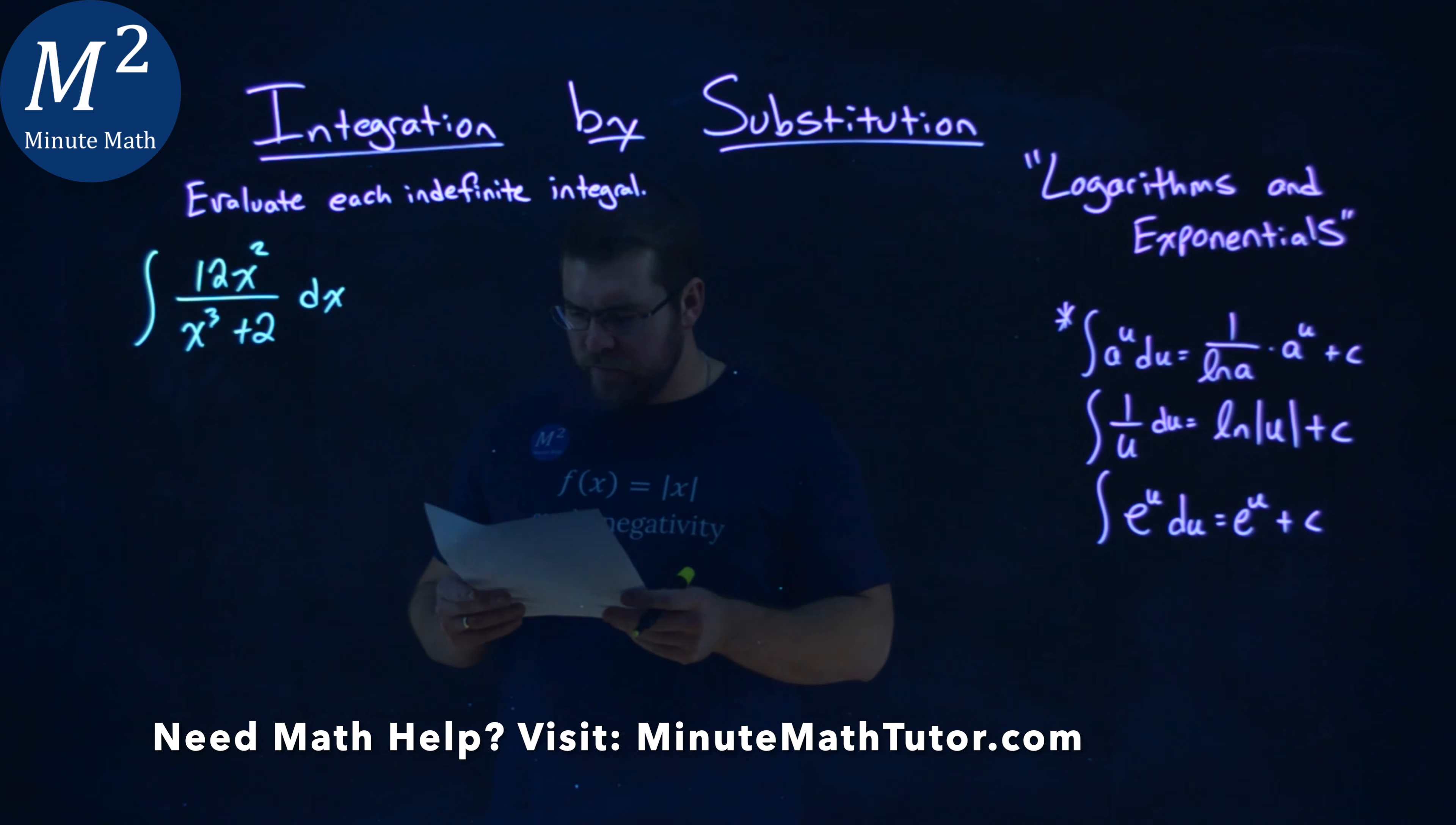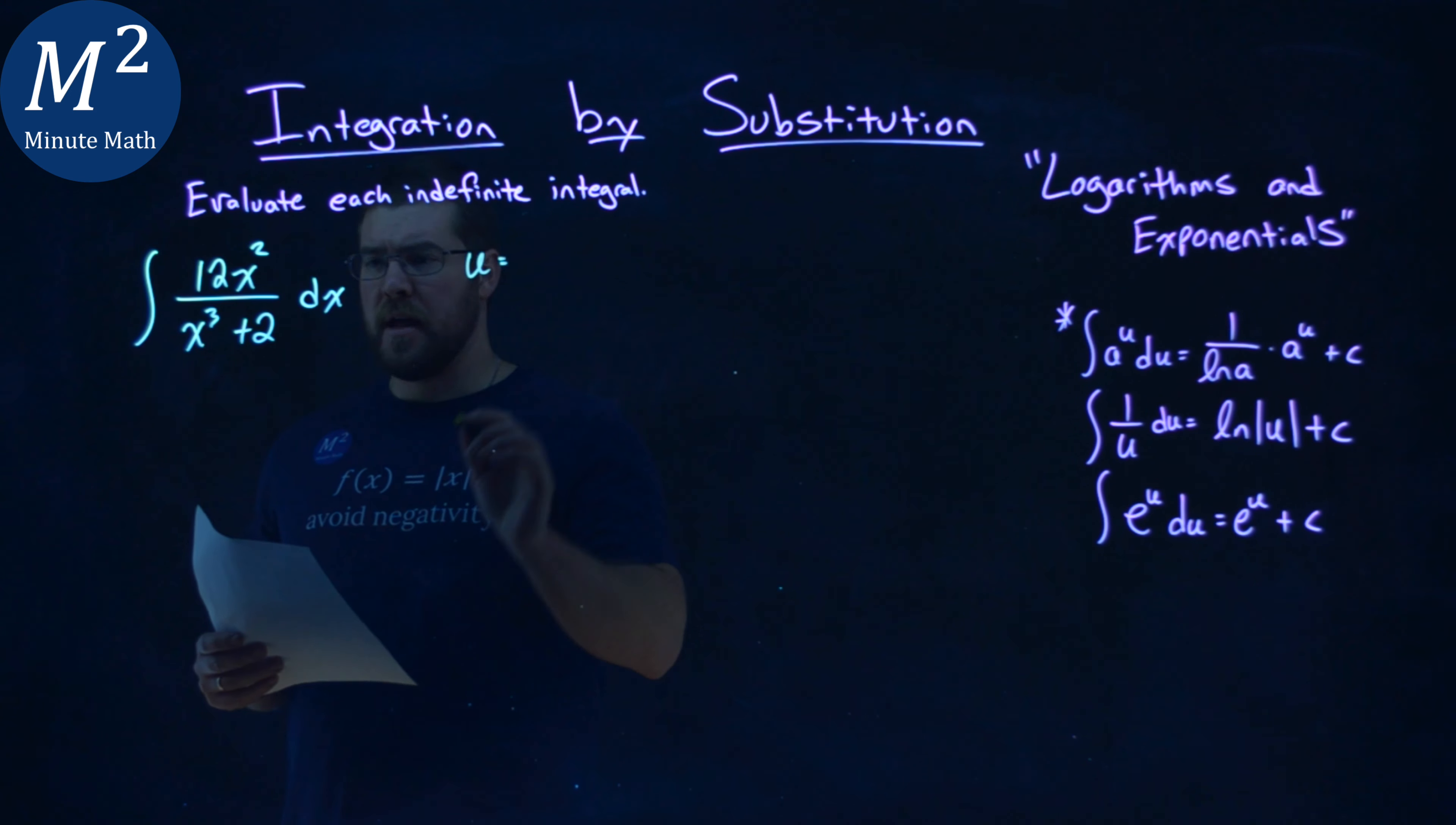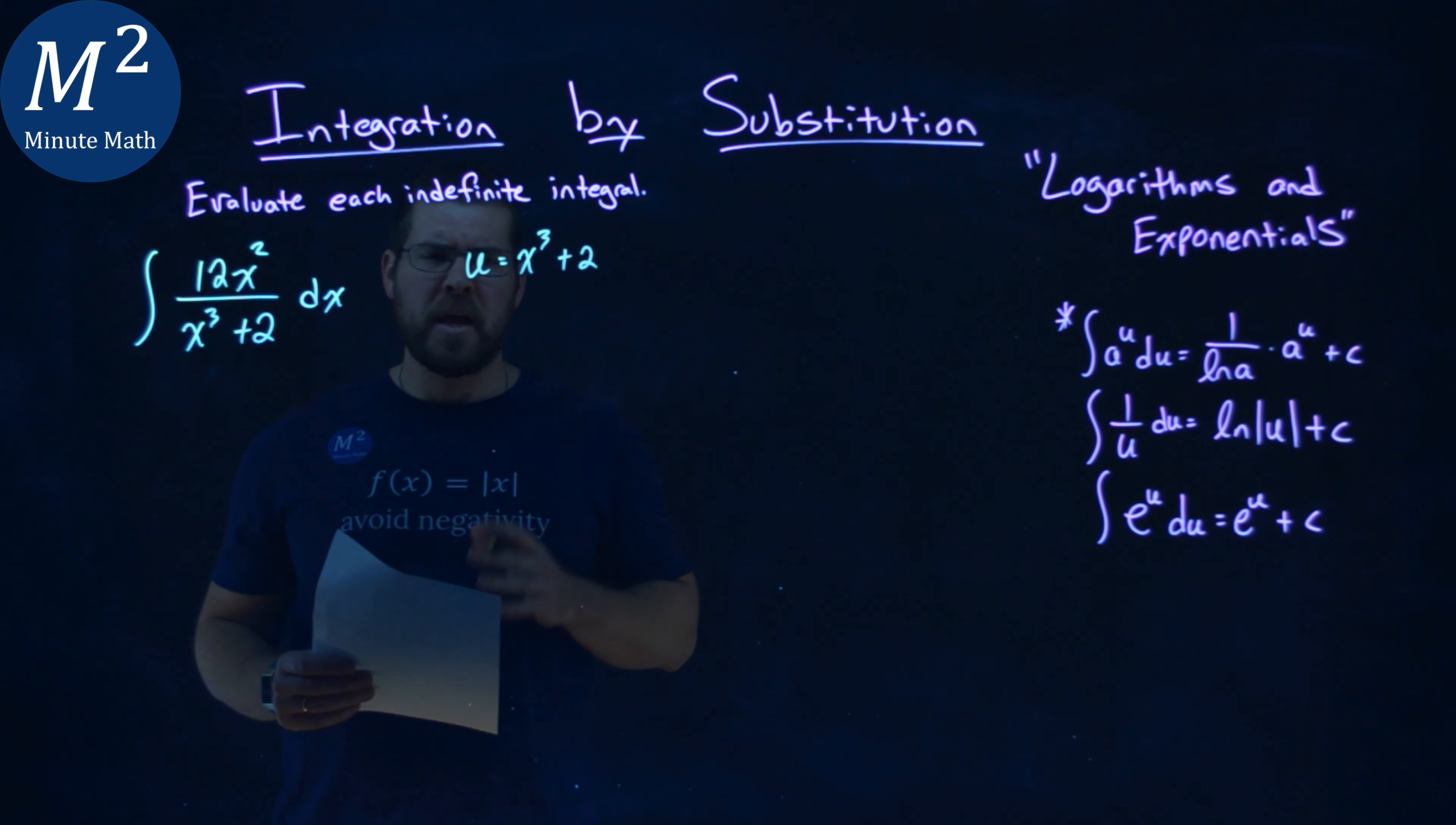The first thing is I want to find a u-value here, and I'm going to set my u-value to be the denominator, x to the third plus 2.